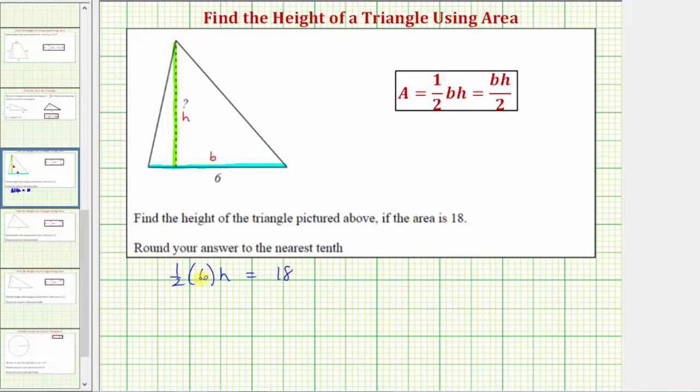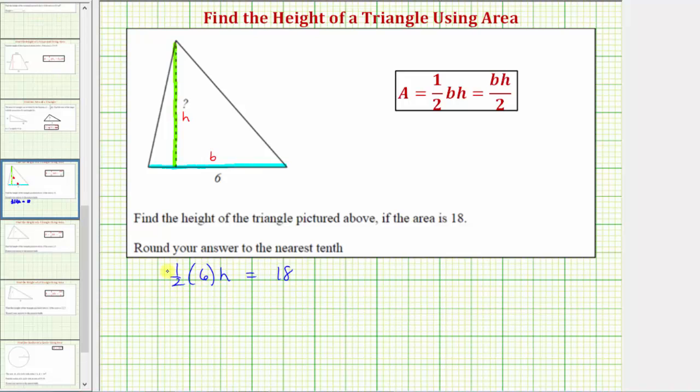One-half times six, or one-half of six is equal to three, and therefore the left side simplifies to three H. So we have three H equals 18.